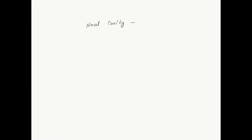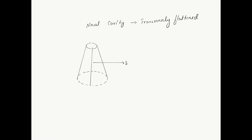Coming to the nasal cavity proper. The nasal cavity is actually a transversely flattened structure. It is broader at the base and narrows down as one goes behind. It has a septum dividing it into two parts. It consists of a roof, floor, lateral walls, and two openings which are anterior and posterior.